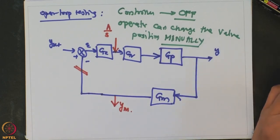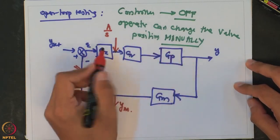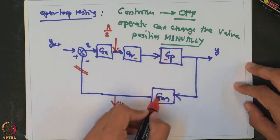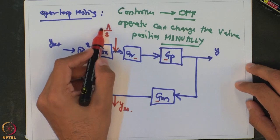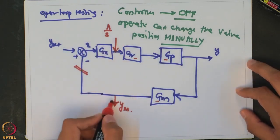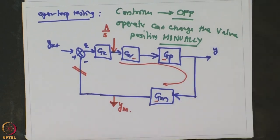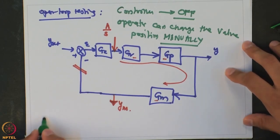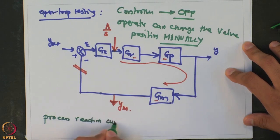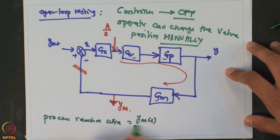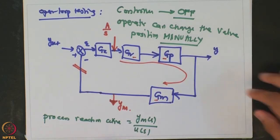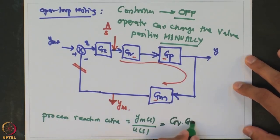During open loop testing, you put the controller into off mode. Now the controller is not in the analysis — you are only analyzing the effect of the valve transfer function, process transfer function, and measurement. You observe how the output changes given a step change in the valve opening. The entire transfer function you are interested in is known as the process reaction curve, which is the product of Gv, Gp, and Gm.